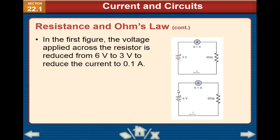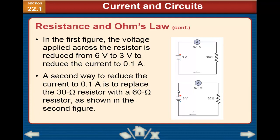In the first figure, the voltage applied across the resistors is reduced from 6 volts to 3 volts to reduce the current to 0.1 ampere. A second way to reduce the current to 0.1 ampere is to replace the 30 ohm resistor with a 60 ohm resistor. So, to decrease the amount of current, you decrease the potential difference or increase the resistance.